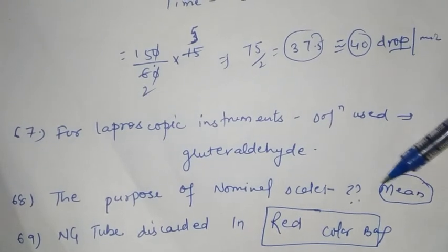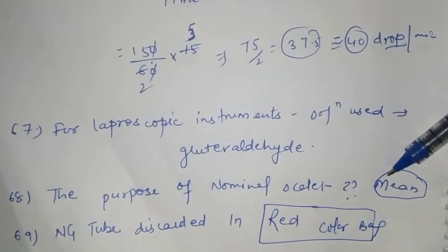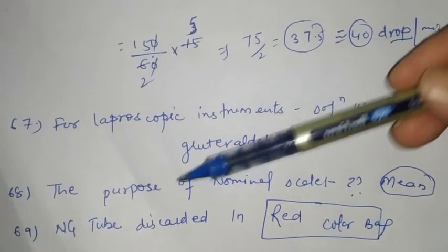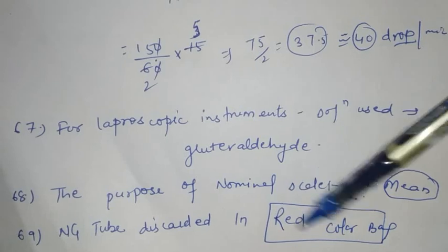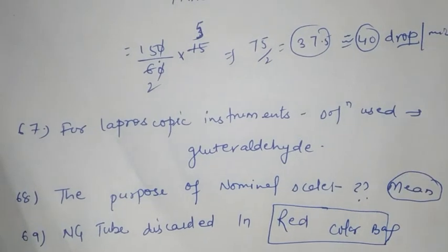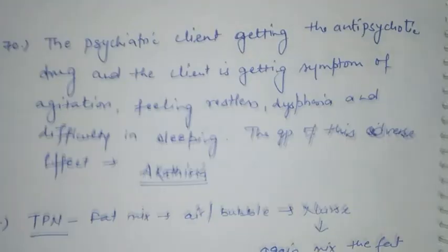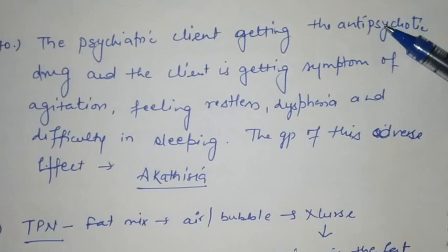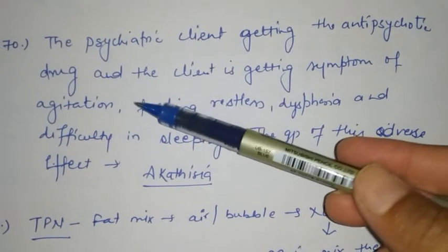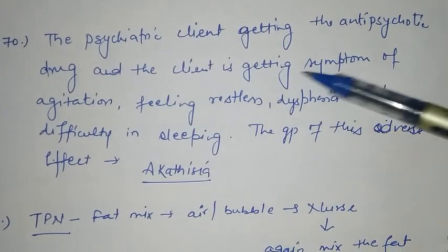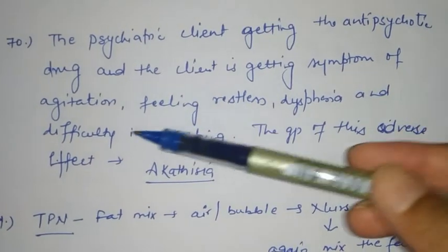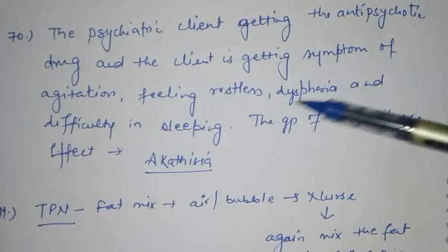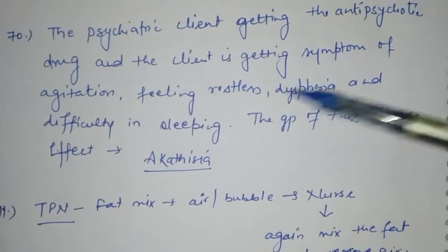Next question: for laparoscopic instruments, the solution used is glutaraldehyde. The purpose of nominal scale — the answer is in doubt and the answer may be mean. NG tube is discarded in the red color bag.